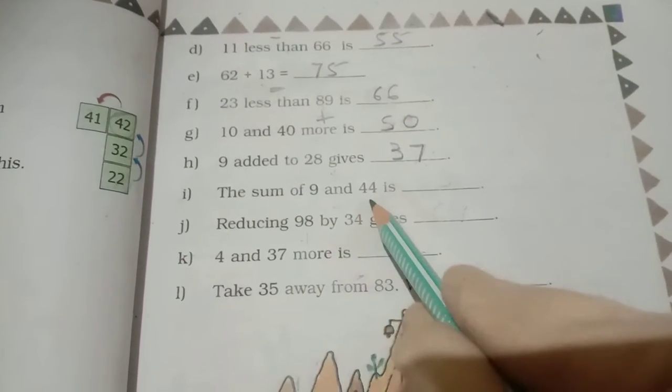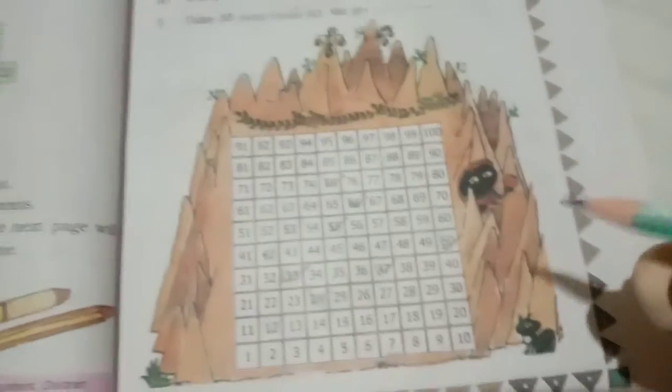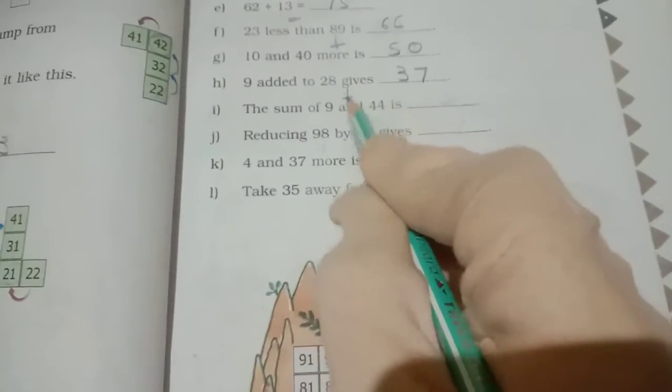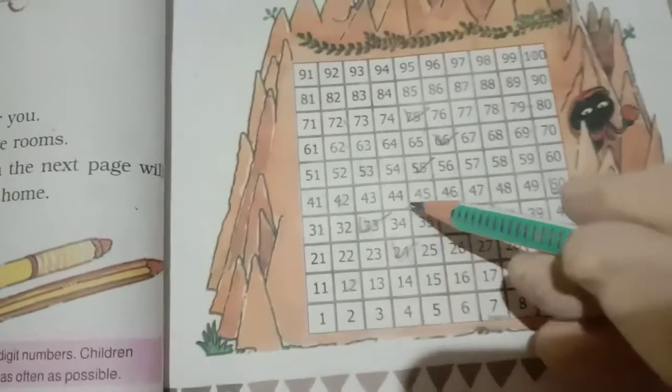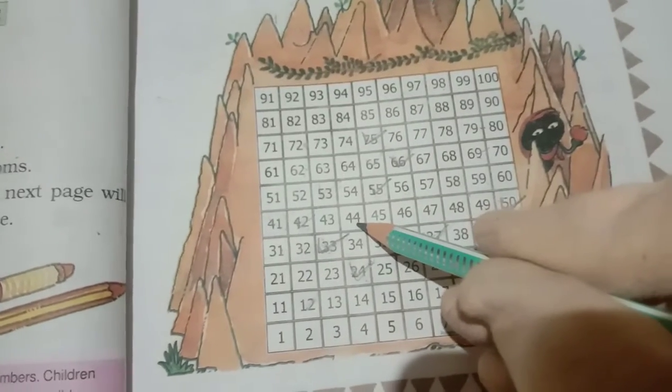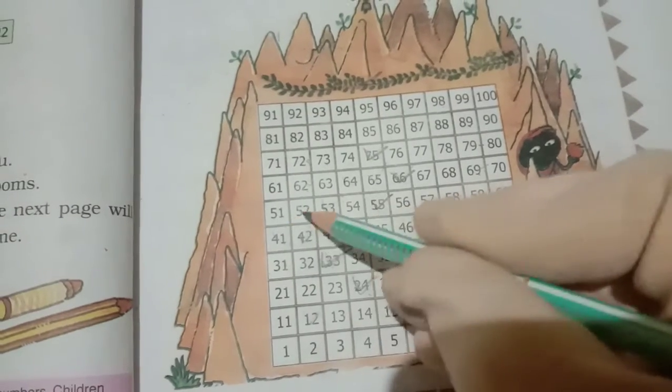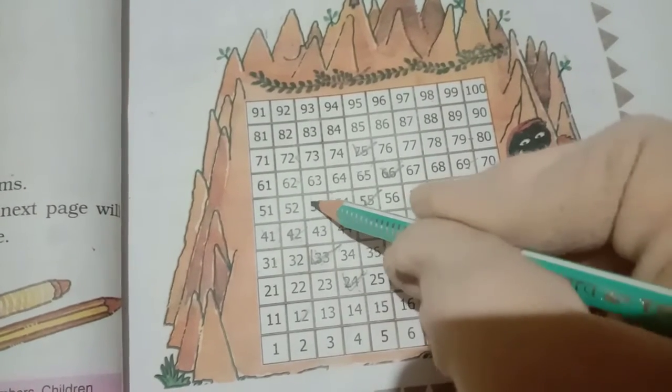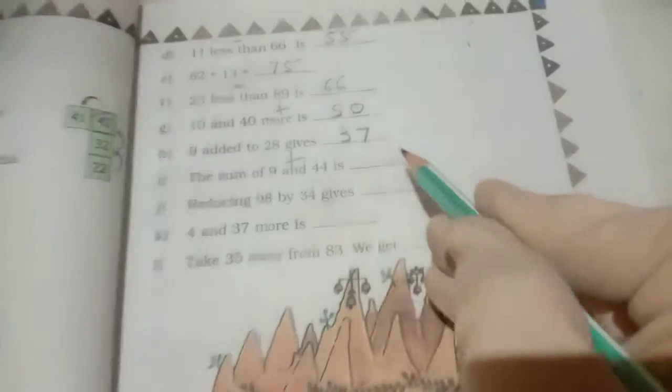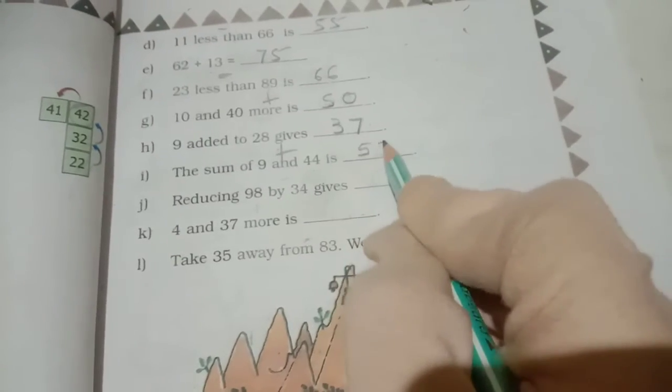Now sum of 9 and 44. Sum means plus. So 44, that we move 9 steps. 1, 2, 3, 4, 5, 6, 7, 8, 9. So answer will get 53. So write in here answer 53.